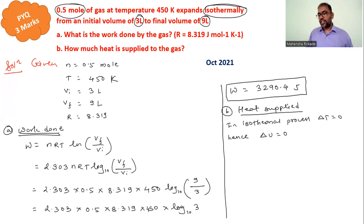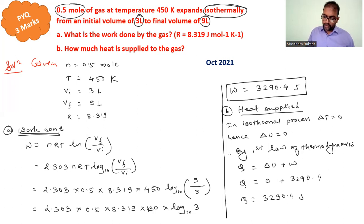Hence no change in temperature, it means that change in internal energy is also zero. By first law of thermodynamics, Q equals delta U plus W. Delta U is zero and W is 3290.4, so Q equals 3290.4 joule. Heat supplied is same as the work done, and this is the answer.